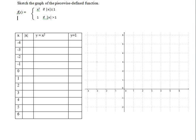Here we're going to sketch the graph of f(x) equals x squared if the absolute value of x is less than or equal to 1, and f(x) equals 1 if the absolute value of x is greater than 1.